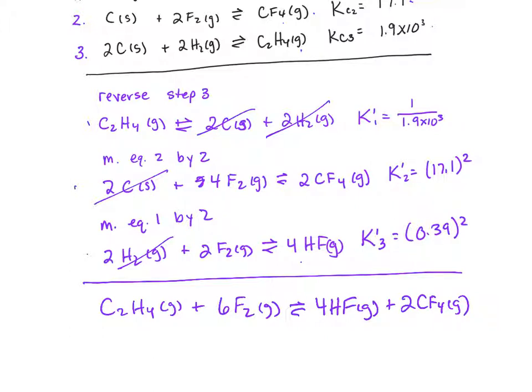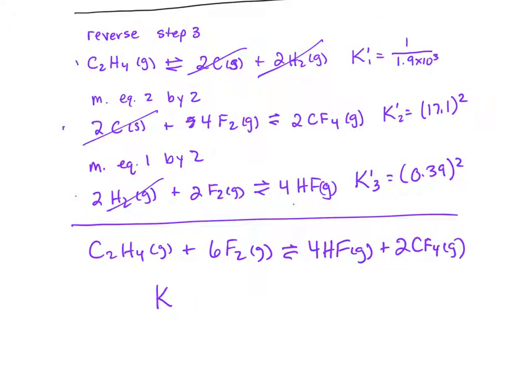Now, when we add up equations, we end up multiplying the Ks together. So our new K, the K we're looking for, is going to be equal to K prime 1 times K prime 2 times K prime 3.